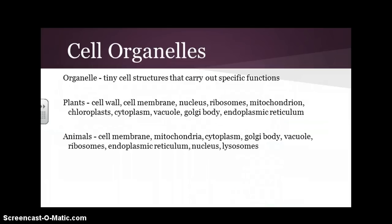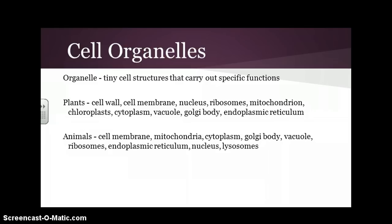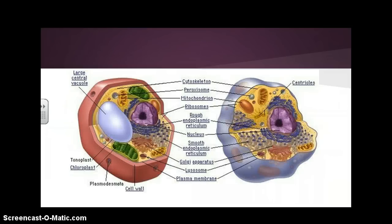Cell organelles — an organelle is a tiny structure that carries out a specific function. Here is a list of some of the organelles found in plant cells and some found in animal cells. You don't have to write them all down right now because we're going to talk about them individually. Here's a picture of a plant cell and a picture of an animal cell — the plant cell is on the left and the animal cell is on the right. Take a moment to look at the things that are similar and different between the two cells.